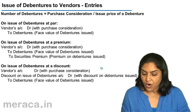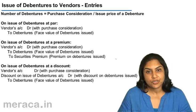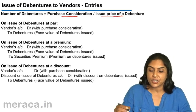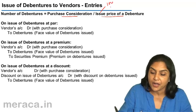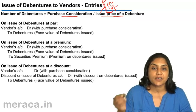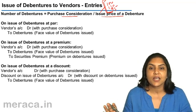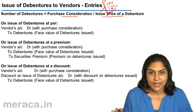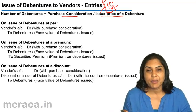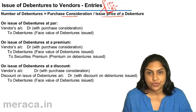Once the entry on takeover of the business or purchase of assets is passed, next we need to compute the number of debentures to be issued: that is purchase consideration divided by the issue price of a debenture. The issue price may be 100 if at par, 110 if at a premium, or 95 if at a discount. Number of debentures multiplied by face value gives the amount by which debentures is to be credited; number of debentures multiplied by premium gives the securities premium; and number of debentures multiplied by the discount amount gives the discount on issue.